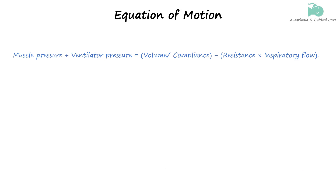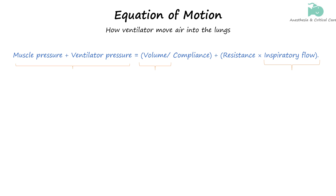Before we begin with control variables, let's briefly go over the mathematical model that relates pressure, volume, and flow during ventilation. This model is known as the equation of the dynamics of the respiratory apparatus, or the equation of motion. It describes how the ventilator moves air into the lungs — specifically, the amount of pressure required to drive air into the lungs at a certain flow rate to achieve a required tidal volume, based on the respiratory compliance and resistance of the patient's lungs.